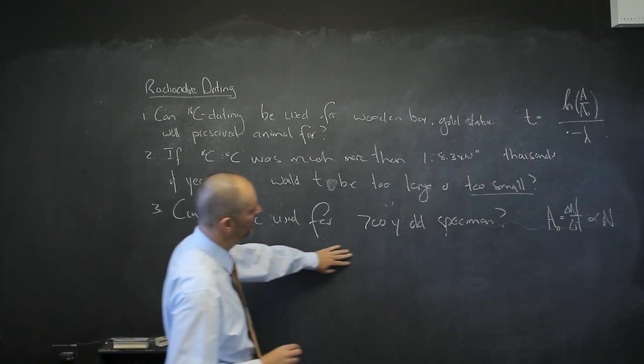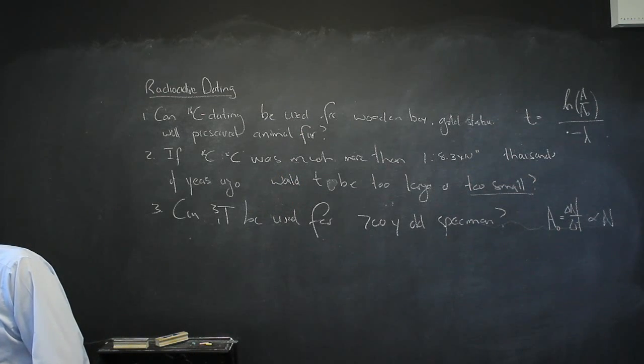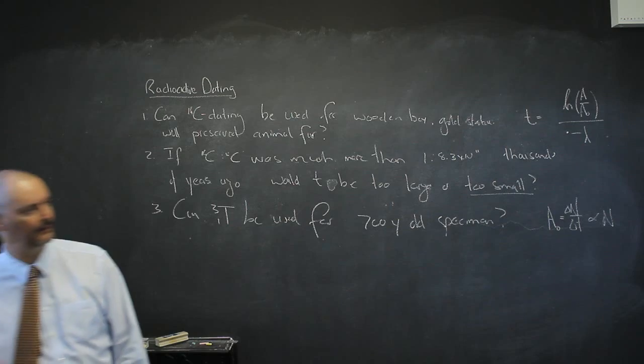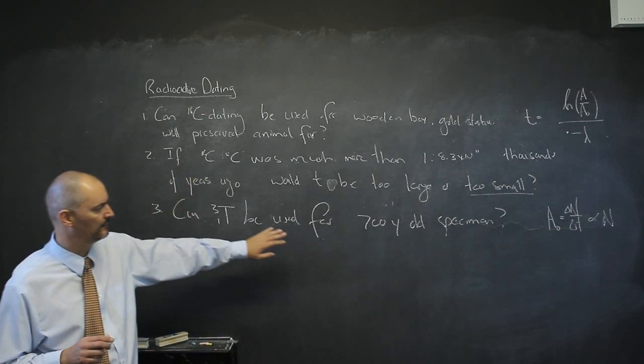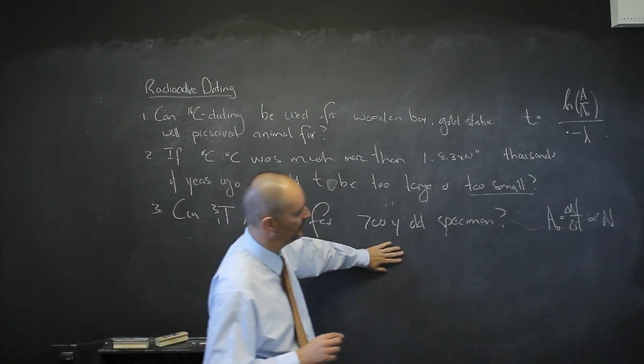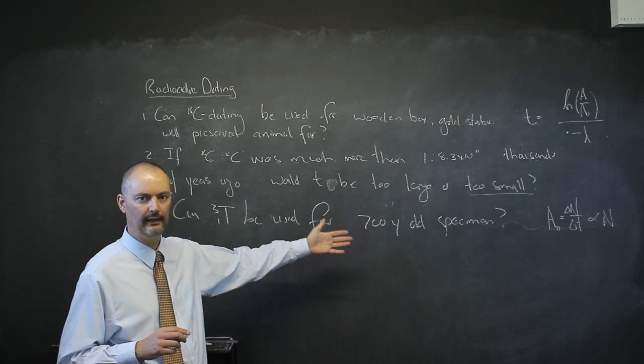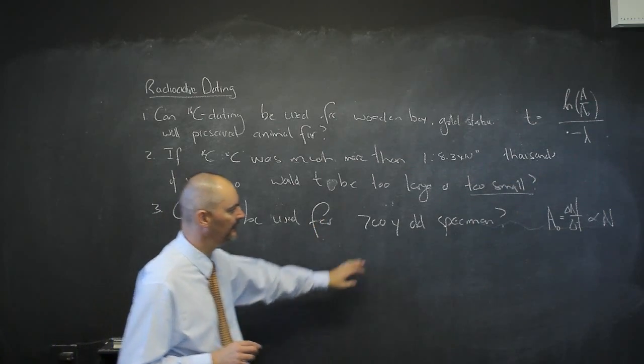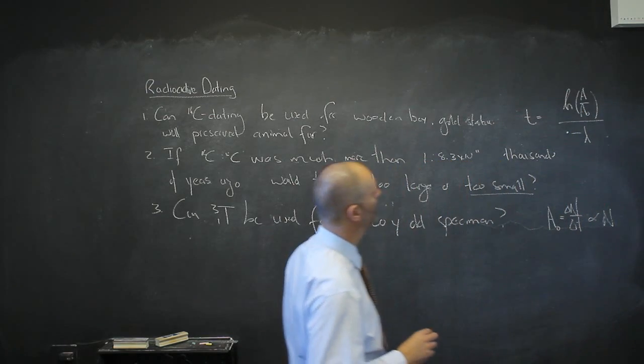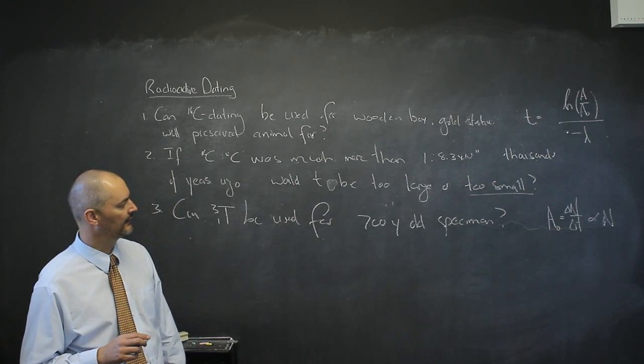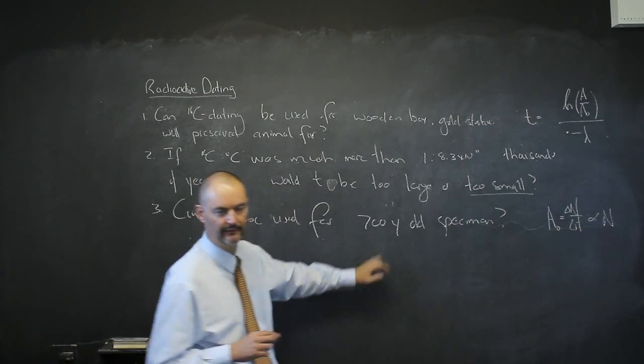Can tritium be used for a 700-year-old specimen? No. We said tritium has a half-life of just over 12 years. After 700 years, the activity in my specimen now would be so enormously low. Every 12 years I have half, half, half—there'll be nothing left. I'll have almost negligible activity today. That means I'm taking the natural log of zero, which is undefined. I cannot use tritium for a specimen that is 700 years old.